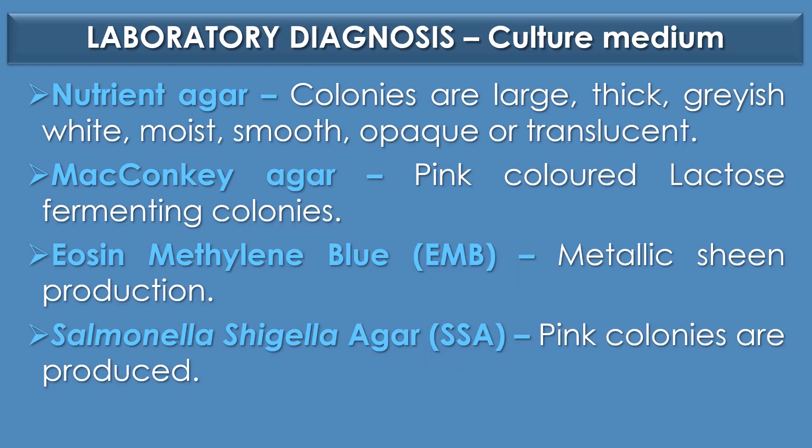Colony morphology on culture medium: In nutrient agar, E. coli colonies are large, thick, grayish-white, moist, smooth, opaque or translucent. In MacConkey agar, E. coli produces pink-colored lactose-fermenting colonies. In eosin-methylene blue agar or EMB agar, which is the selective medium for E. coli, E. coli shows metallic sheen production. And finally, in Salmonella-Shigella agar, E. coli shows pink colonies.